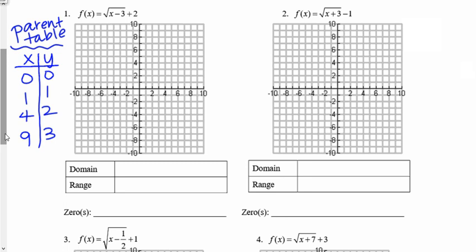Our next step is to look at what transformations are going on within this function. I have an x minus 3 within the radical. Everything inside the radical always affects our x values; everything outside affects our y values. Because I have x minus 3, and because whatever's inside lies, I'm always going to do the opposite — so I'll add 3 to my x values. Adding 3 to all the original x values gives me 3, 4, 7, 12.